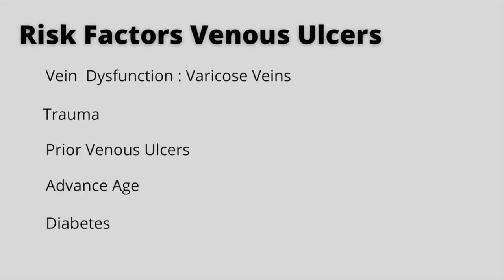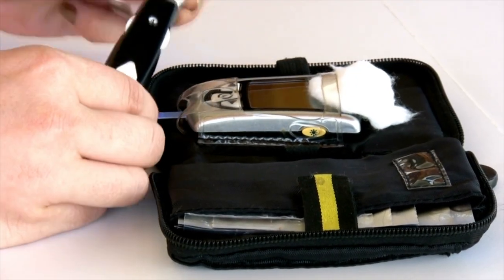Let's talk about risk factors that contribute to venous insufficiency ulcers: vein dysfunction, trauma, previous history of venous insufficiency ulcers, and advanced age. Another risk factor is definitely diabetes. Diabetes is one of those diseases that slows down all three stages of wound healing, especially when the patient's blood sugars are uncontrolled. When I see a patient for any form of arterial or venous insufficiency ulcers, I also look at their blood sugars, because higher, more uncontrolled blood sugar will delay wound healing.